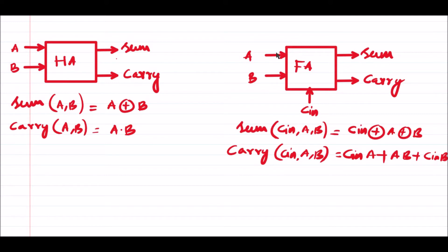In the previous session we discussed a half adder, which is a 2-bit adder that receives two inputs A and B and produces two outputs: sum and carry. The sum equation for a half adder is A XOR B, and the carry equation is A dot B — that is, the XOR and AND connections of the two inputs respectively.